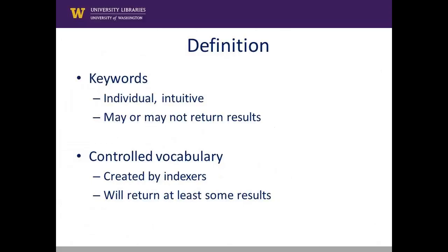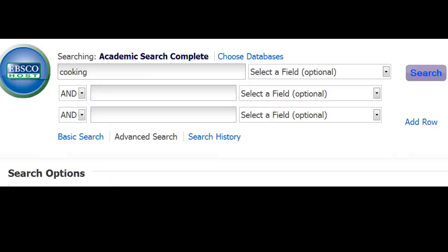Unlike keywords, which are generated individually and intuitively by database users and may or may not return results in a search, controlled vocabulary are created by indexers specifically to describe items within a database and so are guaranteed to produce at least some results. For instance, you might search a database for the keyword cooking and get 50 results, but get 80 results by searching on the subject heading cookery.